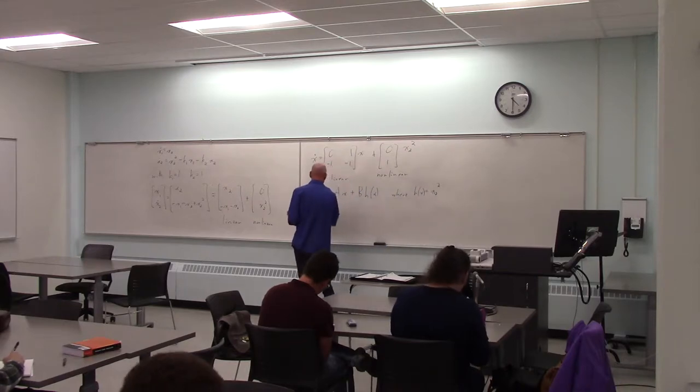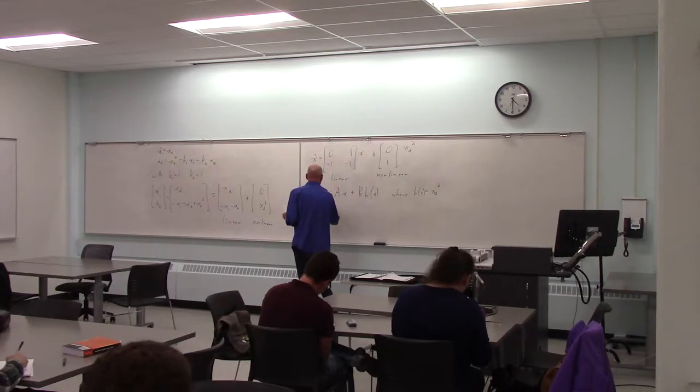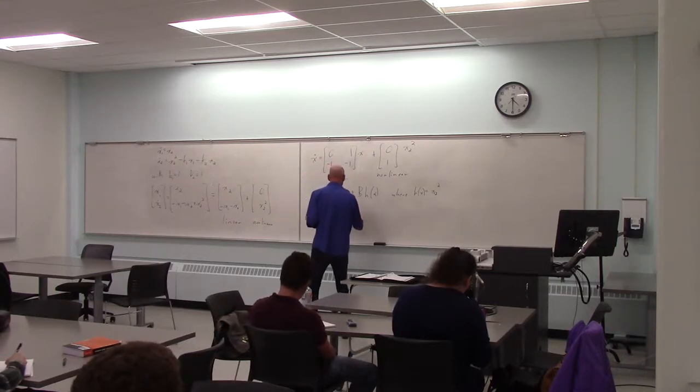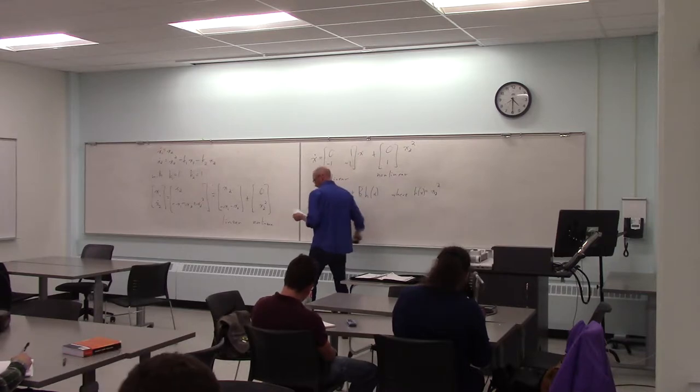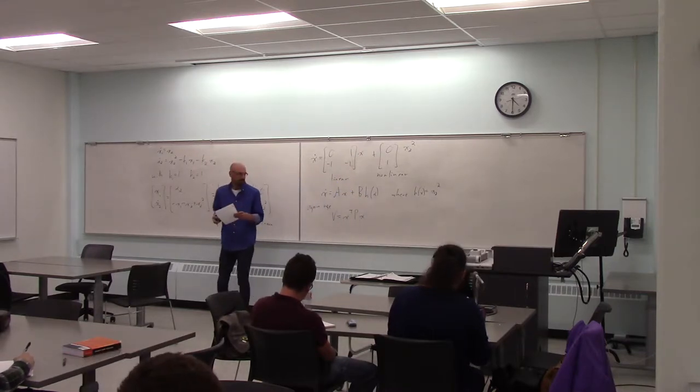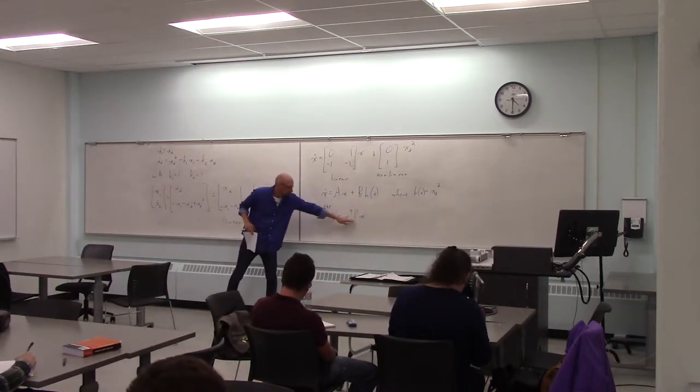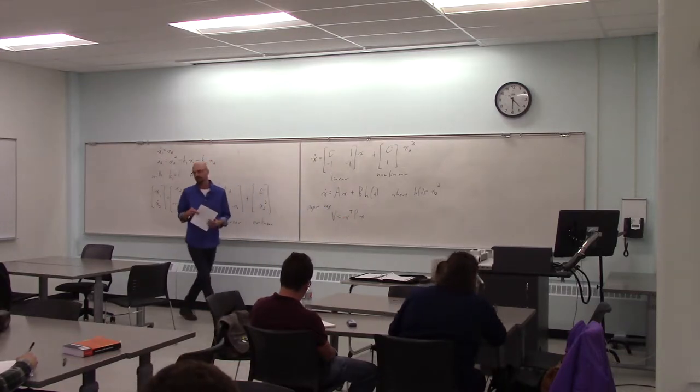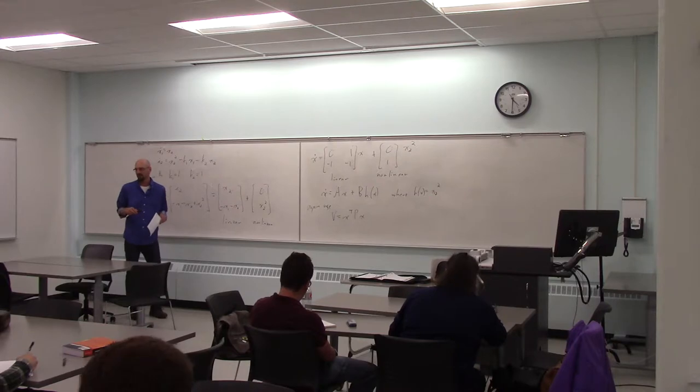So I have, again, I'm just going to use this quadratic form for my v. So x transpose px, and now p is not mysterious anymore. We know exactly a way to calculate p, so we can stick numbers in there using that Lyapunov equation.